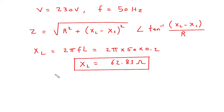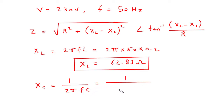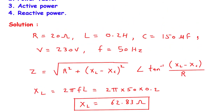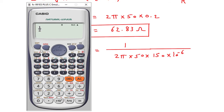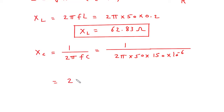Next we have to find XC. To calculate XC, the formula is XC equal to 1 upon 2πFC. So this will be 1 upon 2π multiplied by 50, multiplied by C, which is 150 microfarad, equal to 150 multiplied by 10 to the power minus 6. Solving this gives XC equal to 21.22 Ohm.